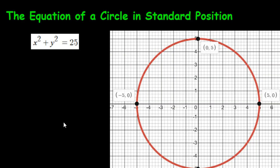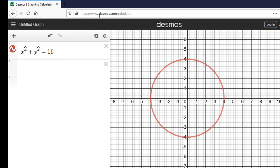Hi there. In this video, we're going to look at the equation of a circle in standard position. Usually in math we do things like lines and graph parabolas, but one of the cool things is you can have a circle if you punch in this equation into a program like Desmos. If you type in x squared plus y squared equals 25, you'll end up with a circle that looks like this. I encourage you to go to desmos.com — it's the best free online calculator I've seen.